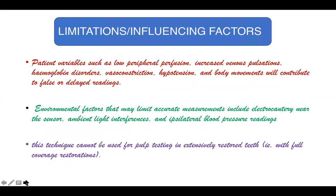Limitations and influencing factors of pulse oximeters include patient variables such as low peripheral perfusion, increased venous pulsations, hemoglobin disorders, vasoconstriction, hypotension, and body movements, which contribute to false or delayed readings. Environmental factors may also limit accurate measurements, including the presence of an electrocautery near the sensor, ambient light interference, and blood pressure changes.